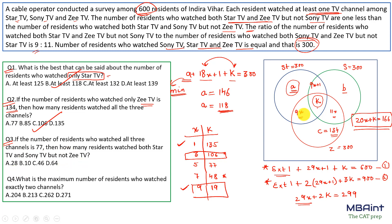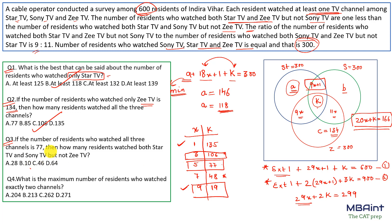Question 3: if the number of residents who watched all three channels is 77, how many watched both Star TV and Sony TV but not Zee TV? K=77 corresponds to x=5 in our table. The required region is 9x+1 = 9(5)+1 = 46.